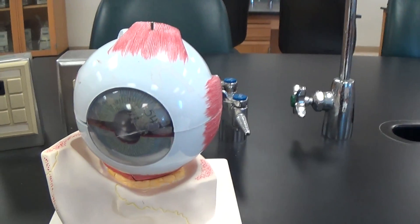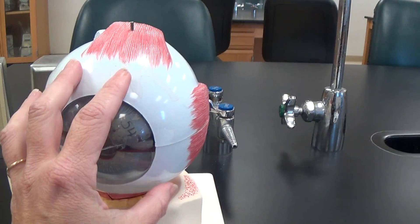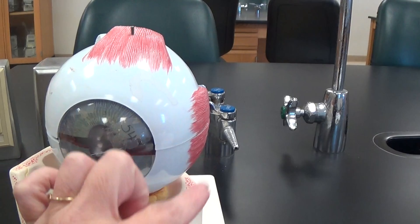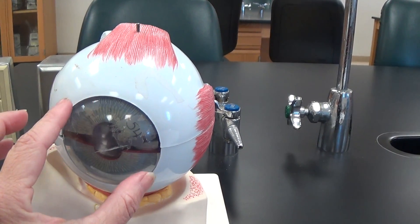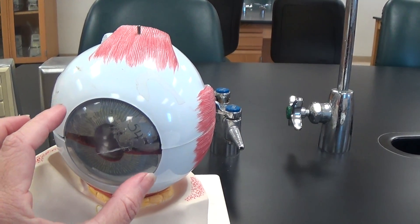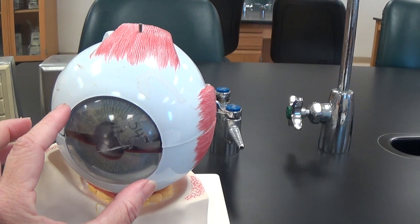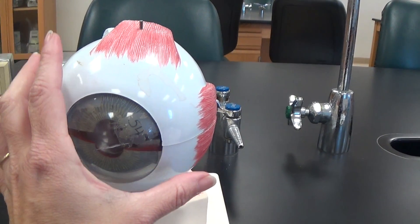Now that takes us to the fibrous coat of the eye. The white around the eye is the sclera, and this clear part in the front, or transparent part, is the cornea. That's the fibrous coat of the eye.